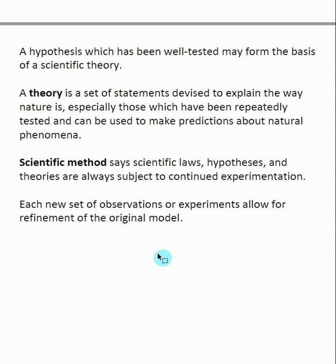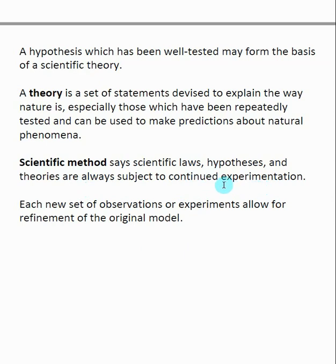And even if something is proven to be true, you can still better explain what's going on. The scientific method says that you continually test a theory, and as you experiment on it, you are able to refine that original model, make it better, and explain what's going on in a superior way.